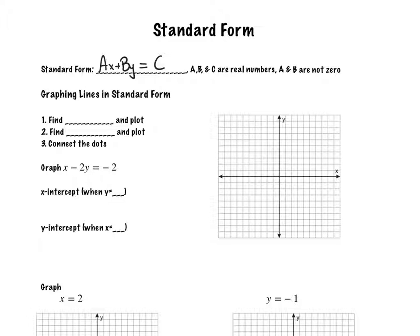When I go to graph these, I'm going to find the x-intercept and the y-intercept. First I'm going to find the x-intercept, then the y-intercept. My x-intercept — where I cross the x-axis — is always going to be when y equals zero. So I plug in zero for y. I have x minus two times zero equals negative two. Anything times zero is zero, so I end up with x equals negative two. There's my x-intercept, so I can plot the point where x is negative two.